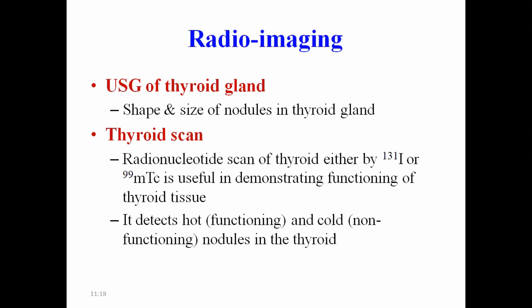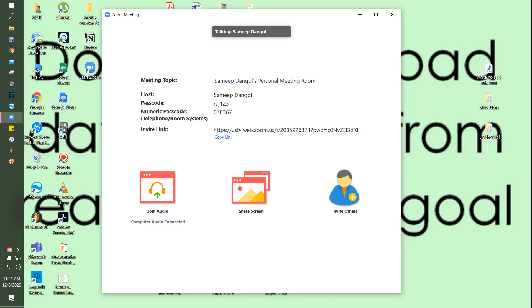Radio imaging is commonly done in hospitals to know the shape and size of nodules in the thyroid gland. This includes USG (ultrasonogram) of the thyroid gland, CT scans, and MRI. Radionuclide scans using radioactive iodine such as I-131 or 99mTc are also done to detect hot and cold nodules in the thyroid. These tests are generally performed to evaluate the anatomical position, shape, and size of the thyroid gland.